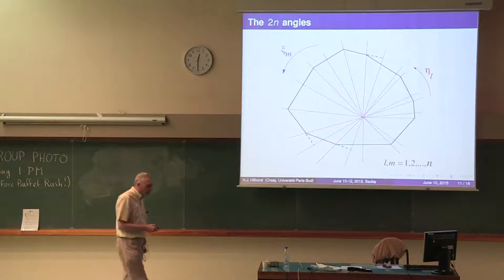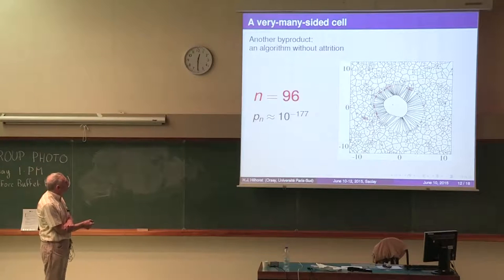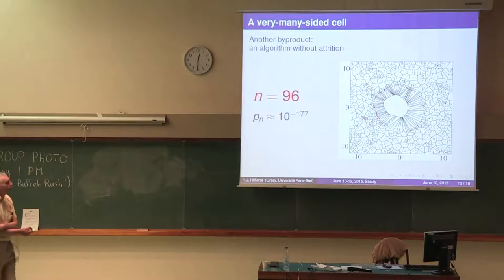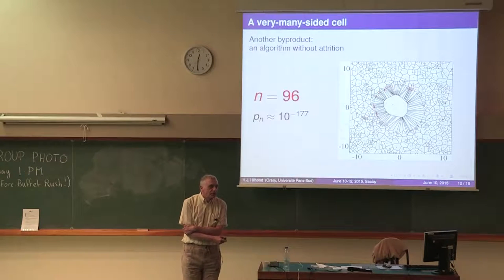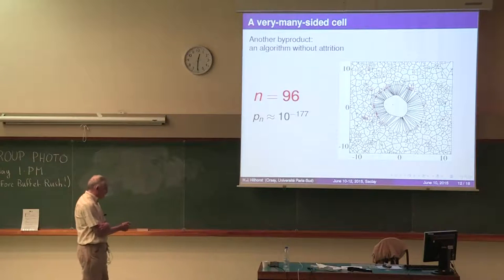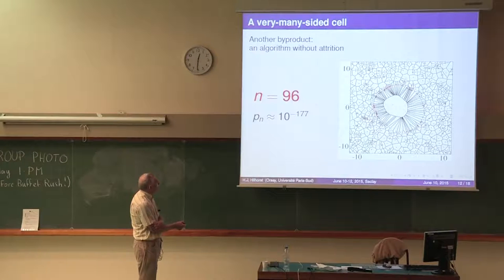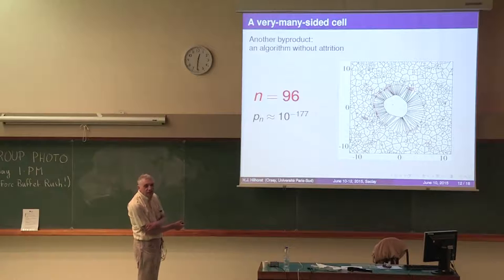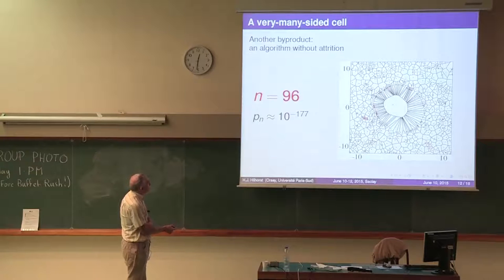Now back to the second byproduct of this calculation. I told you there was an efficient algorithm. Here you see one of the results. I have constructed a cell of 96 sides, an honest, unbiased example. The probability, if you would do a naive Monte Carlo simulation, to hit on a cell of that type is 10 to the minus 177. Obviously we are here in the realm of extreme statistics of large deviations. What strikes you? The cell that you see here is the white area with the seed more or less in the center. The cell is more or less circular, but not quite. So we are still not in asymptotics. Furthermore, the first neighbor seeds, the red dots here, begin to form an almost continuous line. As a consequence, the first neighbor cells are very elongated.